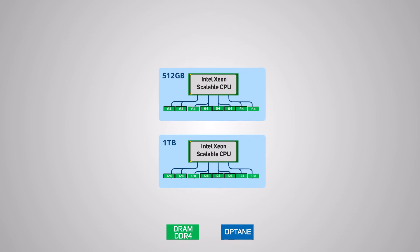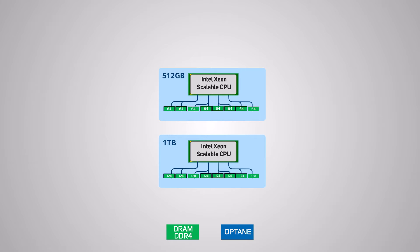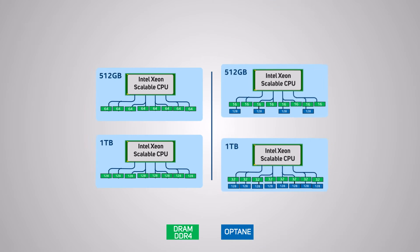As datasets grow and applications become more memory hungry, commonly required memory capacities like 512 gigabytes and one terabyte have traditionally been achieved using DIMMs such as 64 and 128 gigabyte modules, which can be expensive. With PMEM DIMMs such as Optane, these capacities can be achieved using much smaller and cheaper DRAM DIMMs such as 16 and 32 gigabytes.